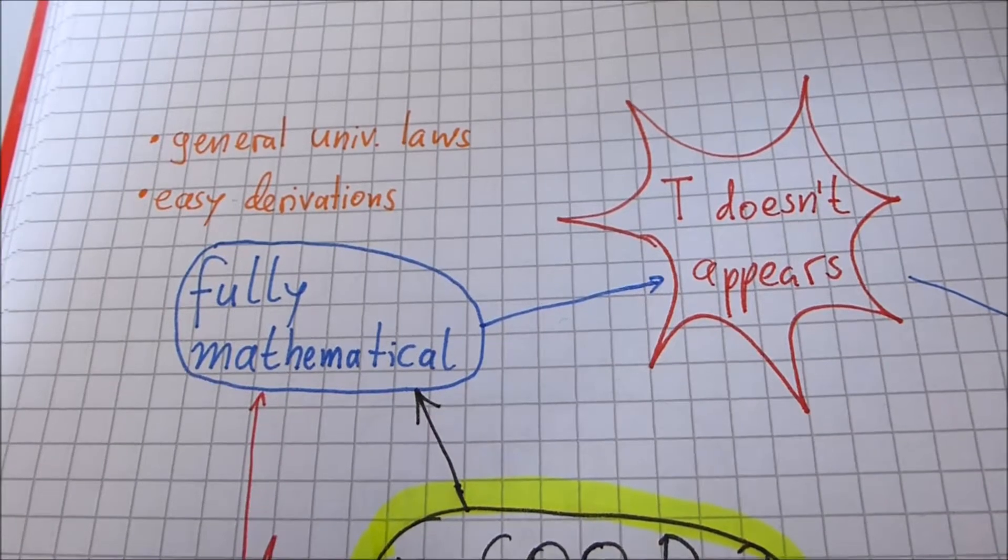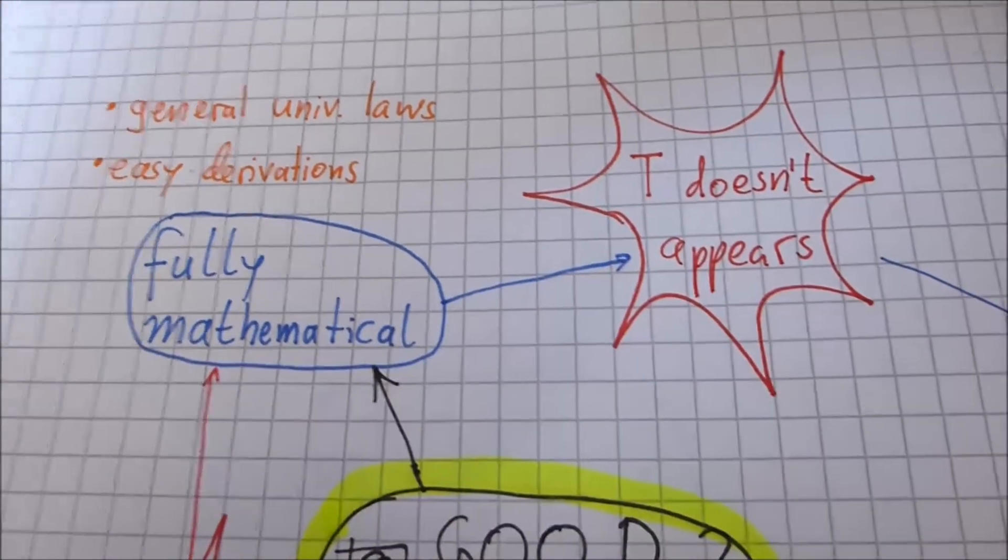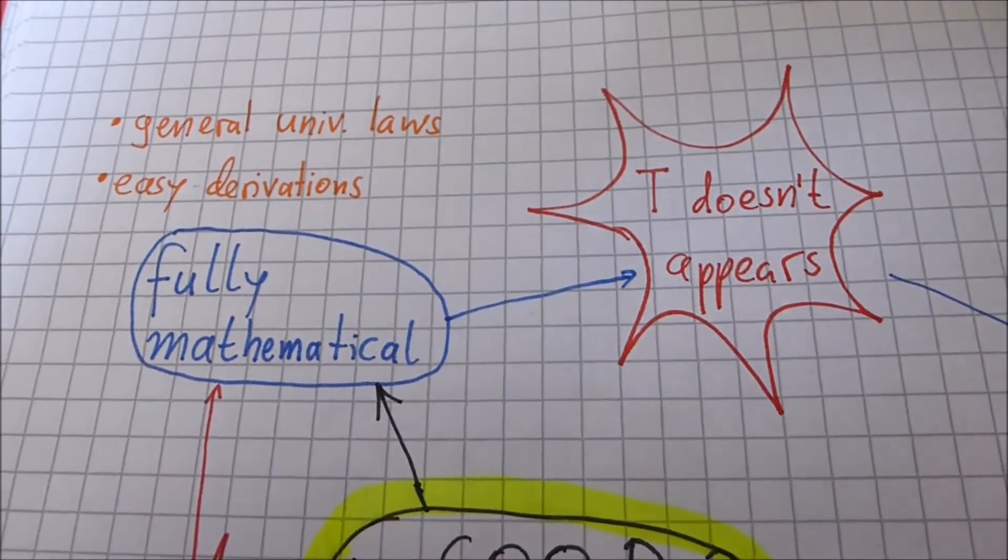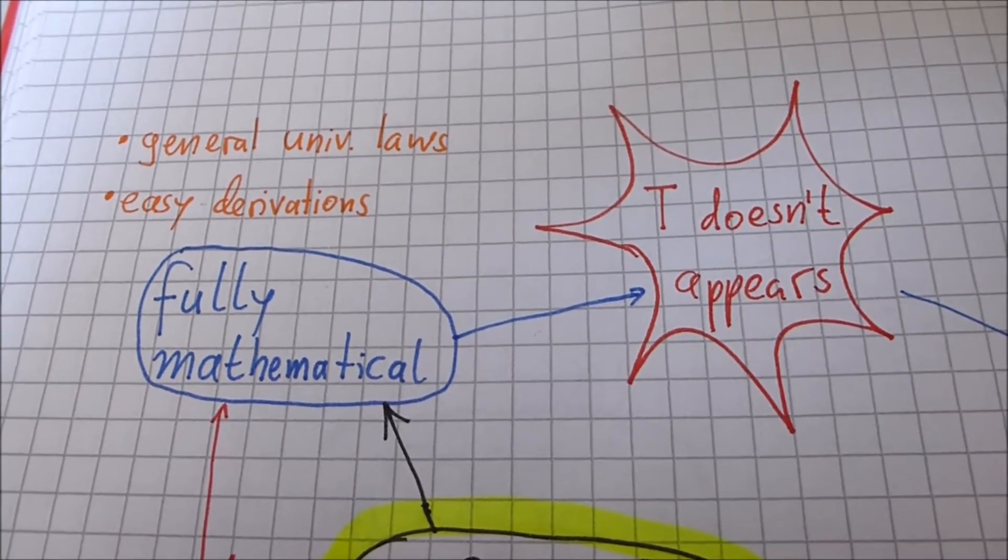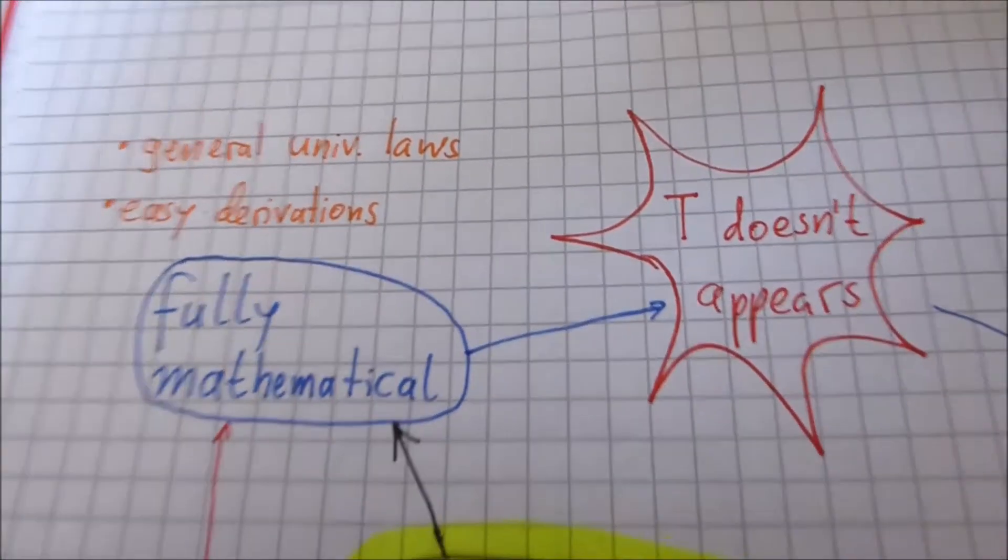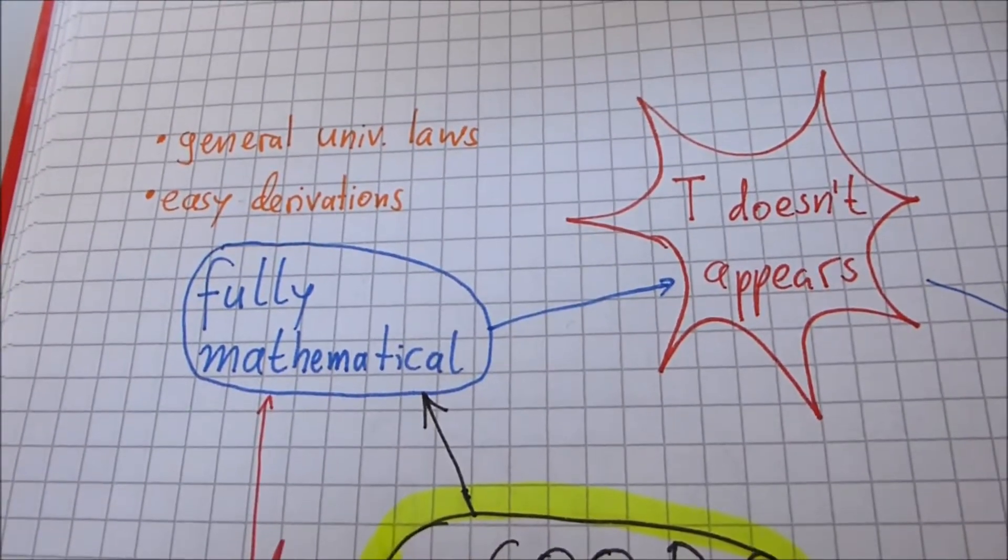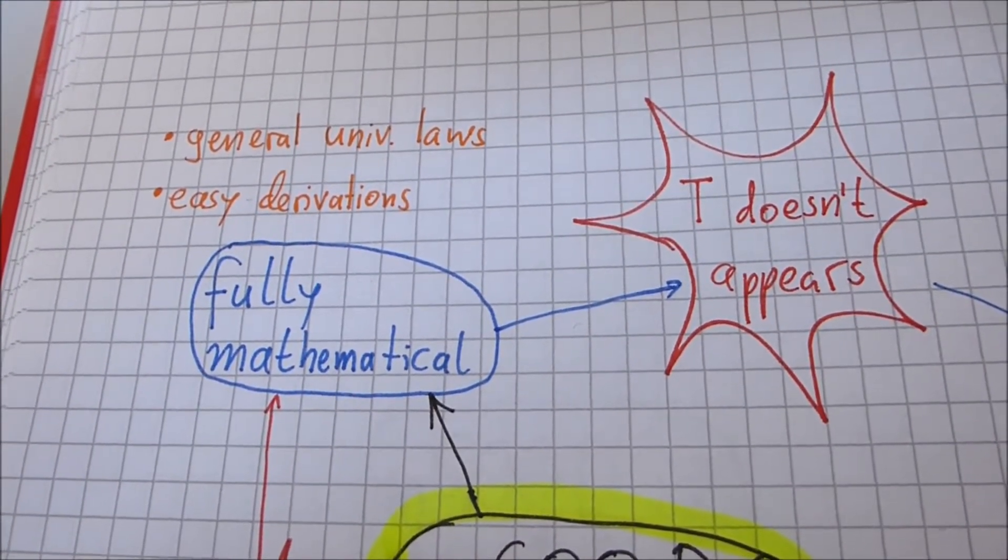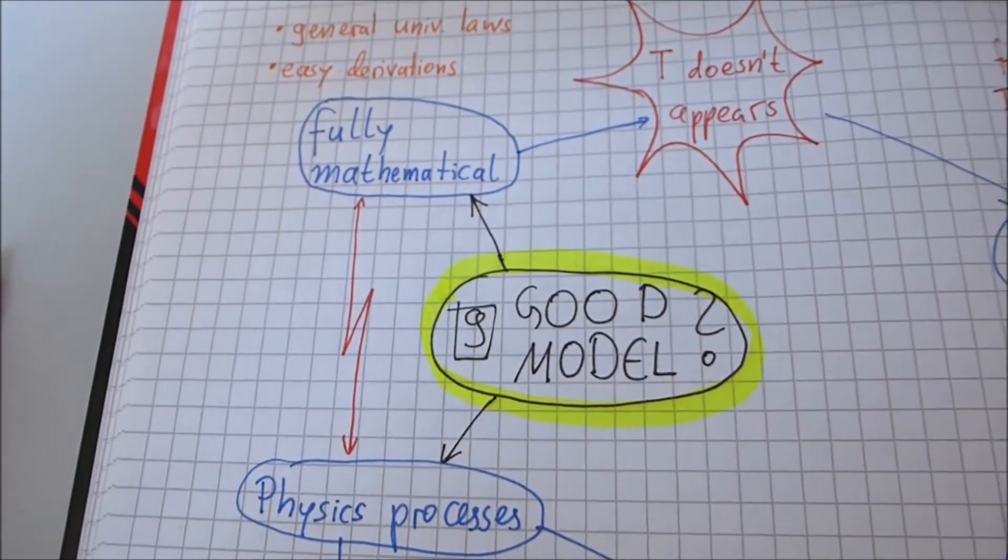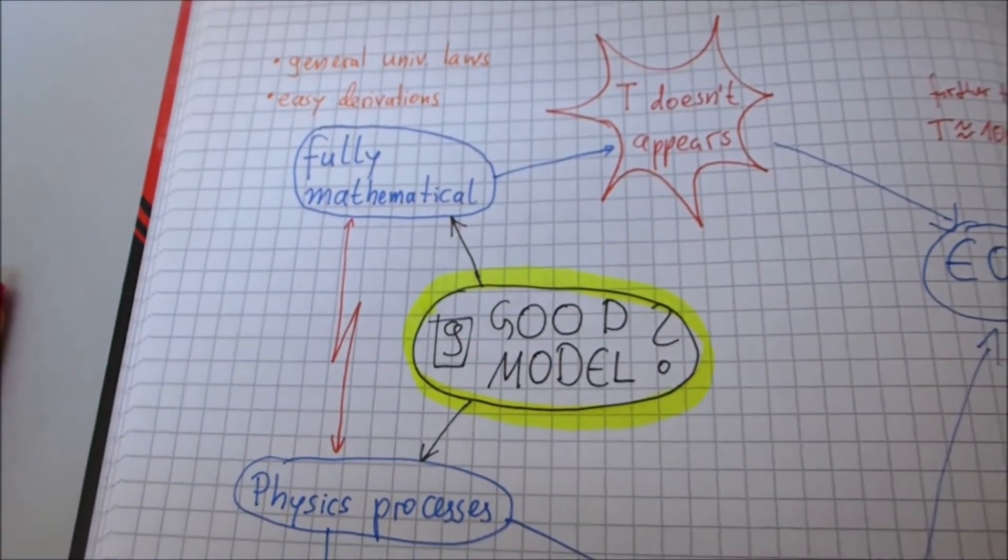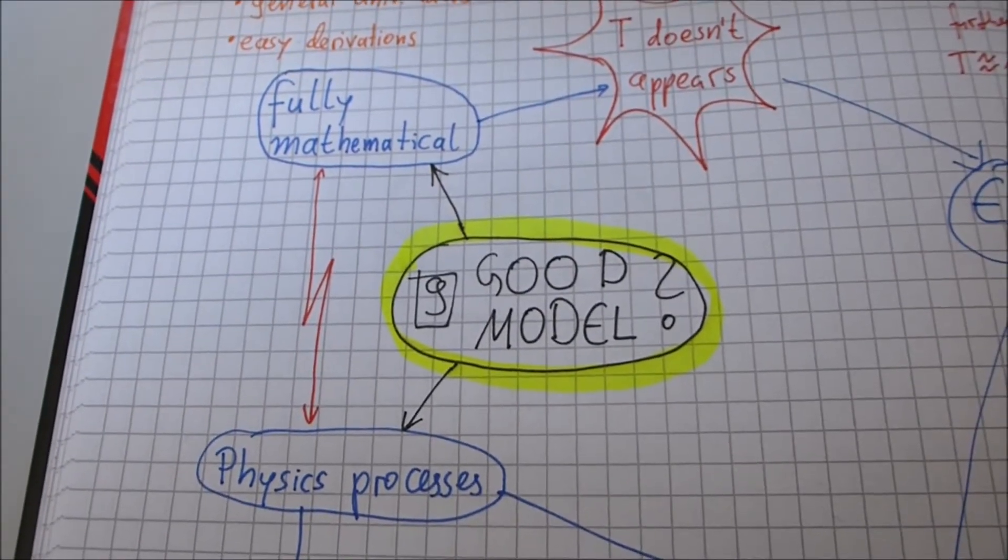An advantage is that we have general universal laws that work on every planet with warm dense matter. And we have easy deviations of these. I show it. It wasn't big mathematics. And a disadvantage is that the temperature doesn't appear. And on the other side, we have to see physics processes. We don't think about physics processes.